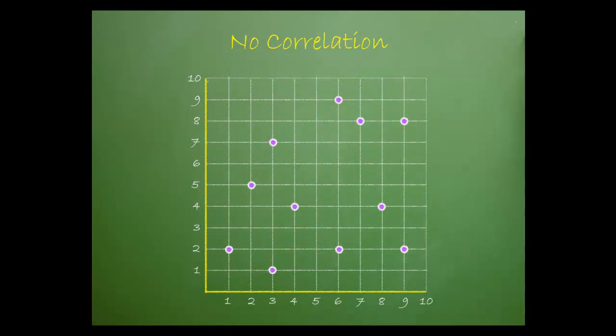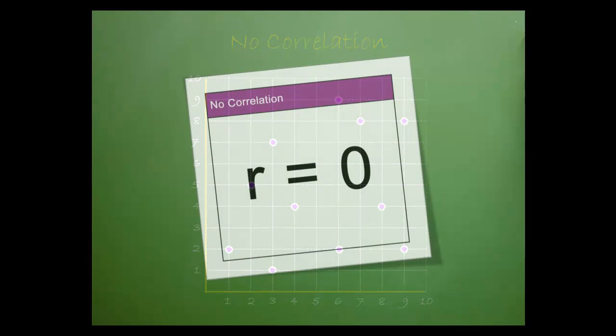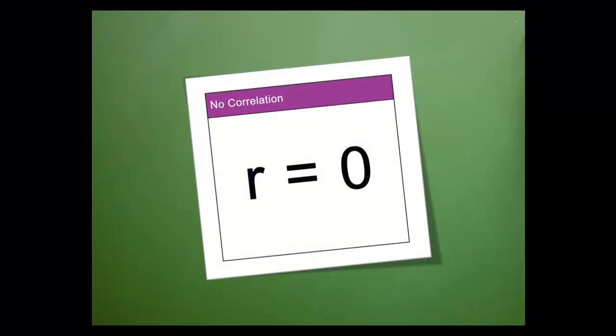In this example, we see data scattered all around the graph. This is said to have no correlation. Data that doesn't seem to be related in any way has an r value of 0.